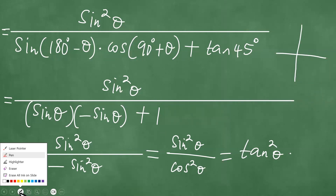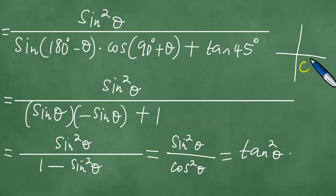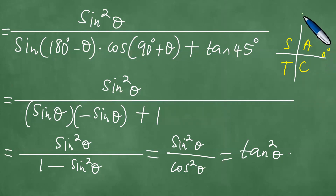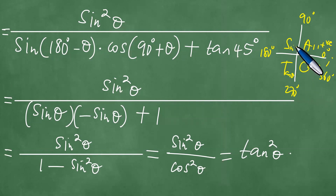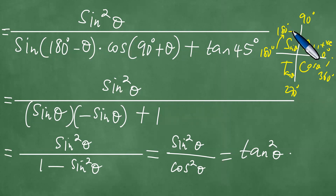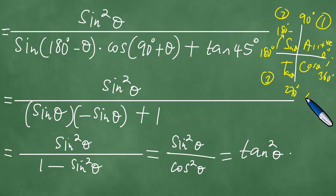A couple of things I want us to mention: the CAST diagram is very important. If you have zero degrees here, 90 degrees there, 180 degrees there, 270 degrees there, and 360 degrees there — all functions are positive in the first quadrant. This gives us cosine theta and tangent theta. Now if you go back from a reference angle, you have 180 minus theta, which puts you in quadrant two, and 180 plus theta in quadrant three.